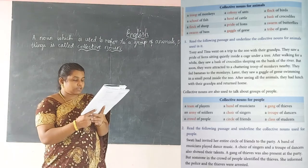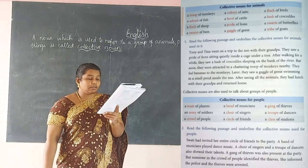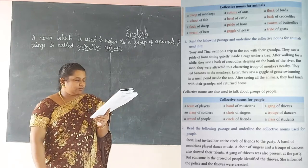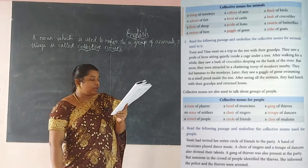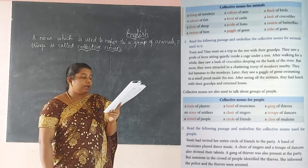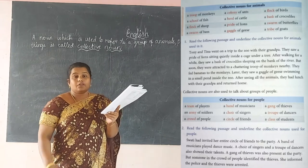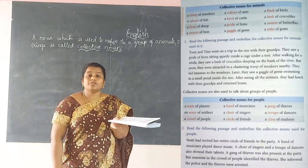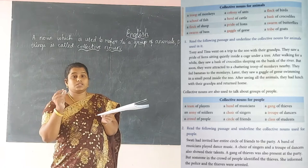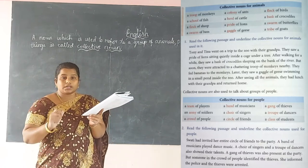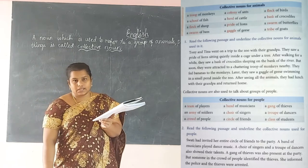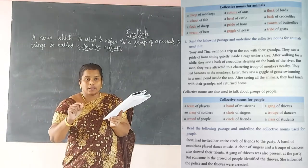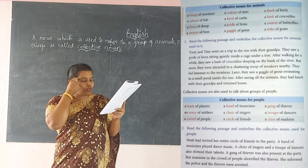Now see the second exercise: read the following passage and underline the collective nouns used for people. In the first line, Swati had invited her entire circle of friends — a group of friends is called 'circle of friends,' so underline the word 'circle.' A band of musicians — underline 'band.' A choir of singers — underline 'choir.' A troop of dancers — underline 'troop.'